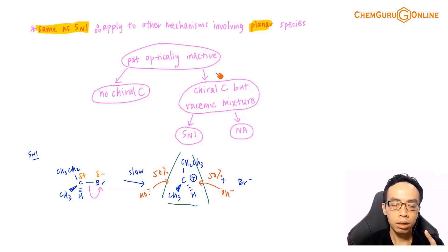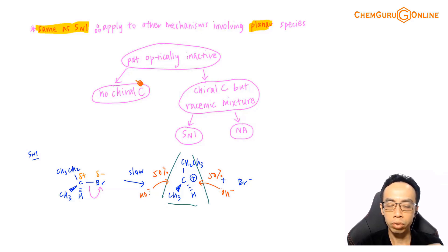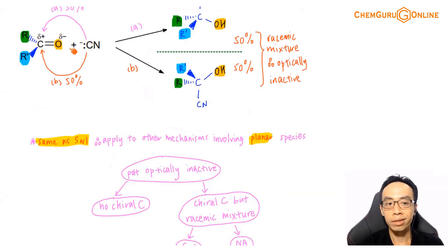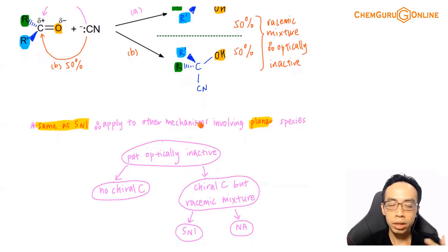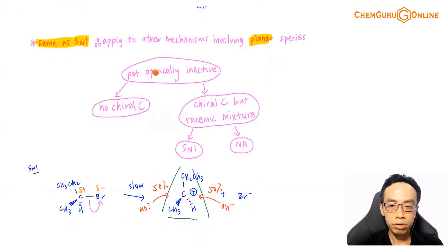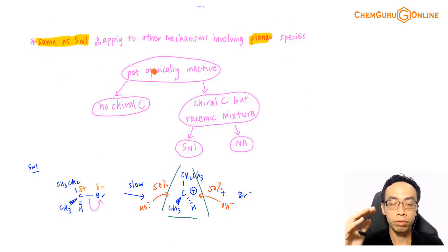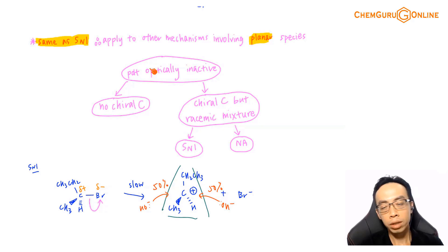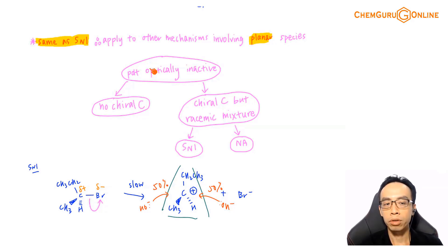The reason both SN1 mechanism and nucleophilic addition mechanism give a racemic product (when a chiral carbon is formed) is that the reactive carbon is planar. In SN1, the carbocation is trigonal planar. In the carbonyl compound, the carbon is already planar. Because the reactive carbon is planar, both sides are equally exposed, the nucleophile attacks from both sides to equal extent, and we end up with a racemic mixture. If a mechanism involves a planar reactive carbon and the product has a chiral carbon, the product will most likely be racemic.